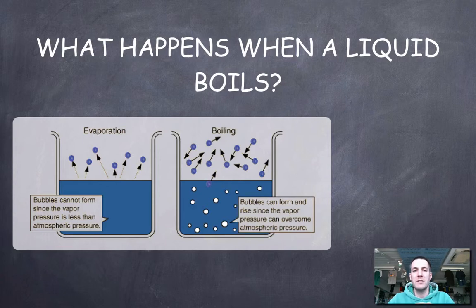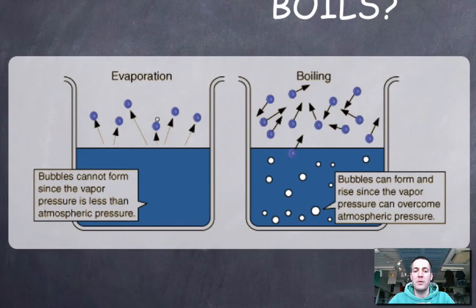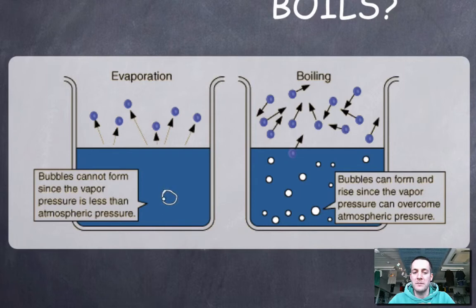Let's think about what happens when a liquid boils, because this also has to do with vapor pressure. We're looking at a liquid that is evaporating but not boiling — particles at the surface have enough energy to escape. If particles tried to escape inside the liquid rather than from the surface, they would form bubbles of gas.